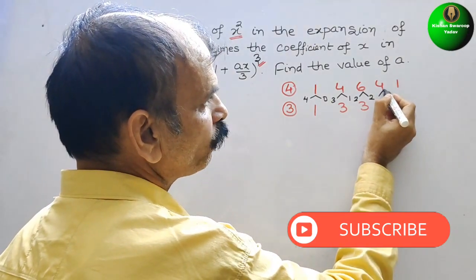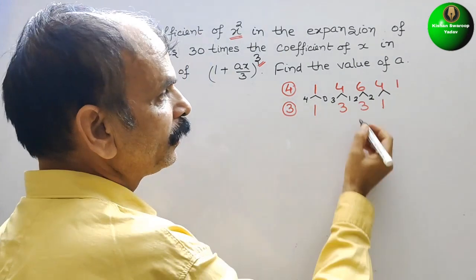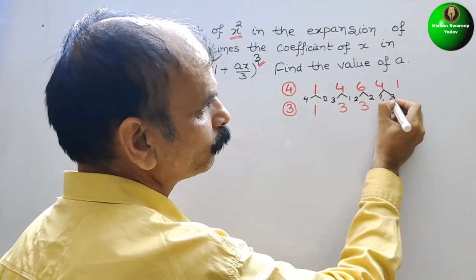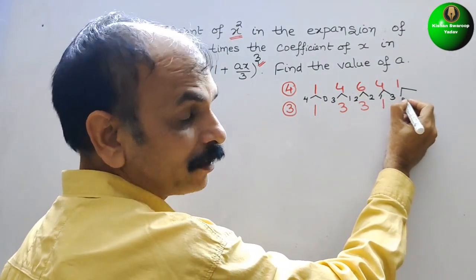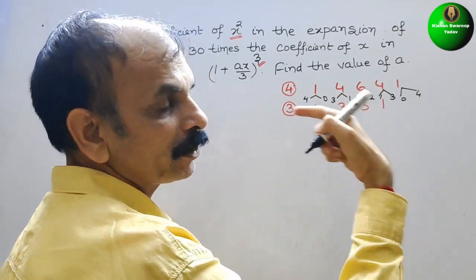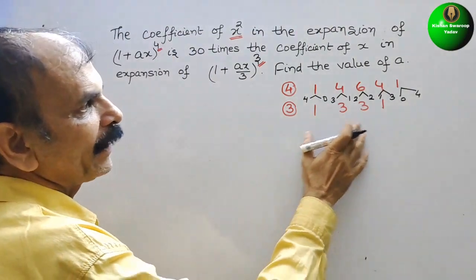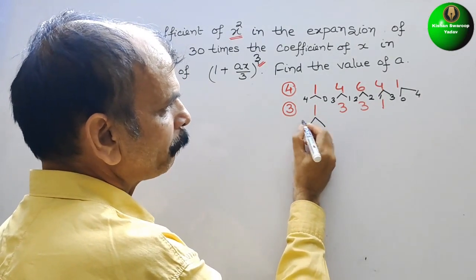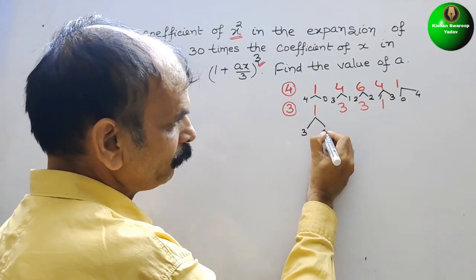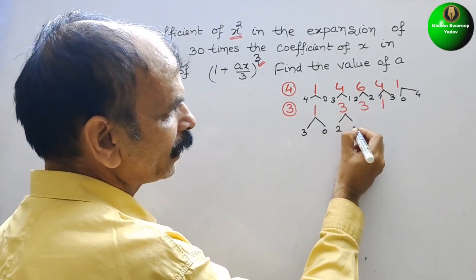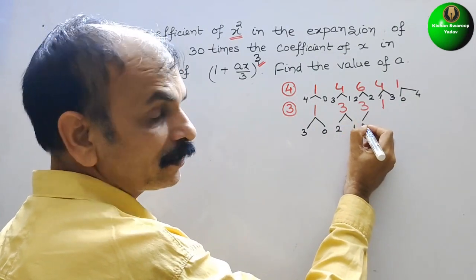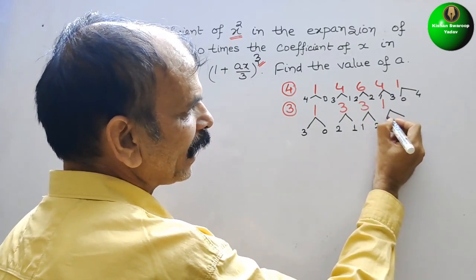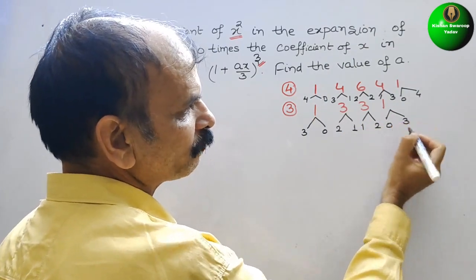Next, looking at the coefficient 4, we track the powers: the first term has power 1 and the second term has power 3, and for the last term, the first is power 0 and the second is power 4. For the second expansion (1 + ax/3)³, the first term has power 3, then 2, then 0, and the last term will be cubed.